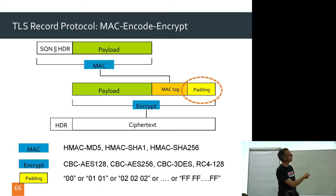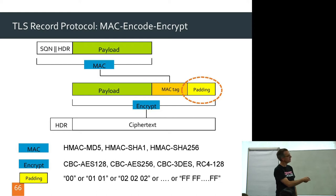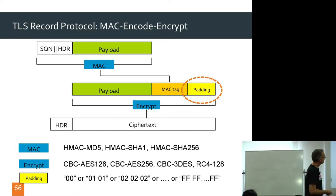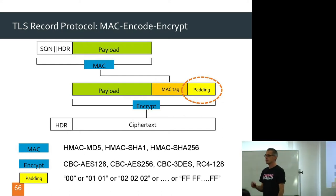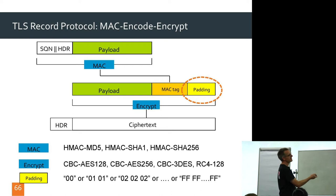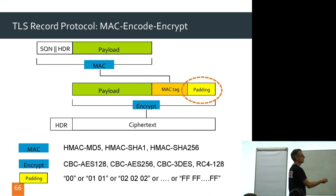Remember, we have 13 bytes of header. We have the payload coming from the application. We go through a MAC step to give us our MAC tag, which in my slides is colored bright orange. And then we have the padding, which in my slides is colored bright yellow so you can differentiate it.